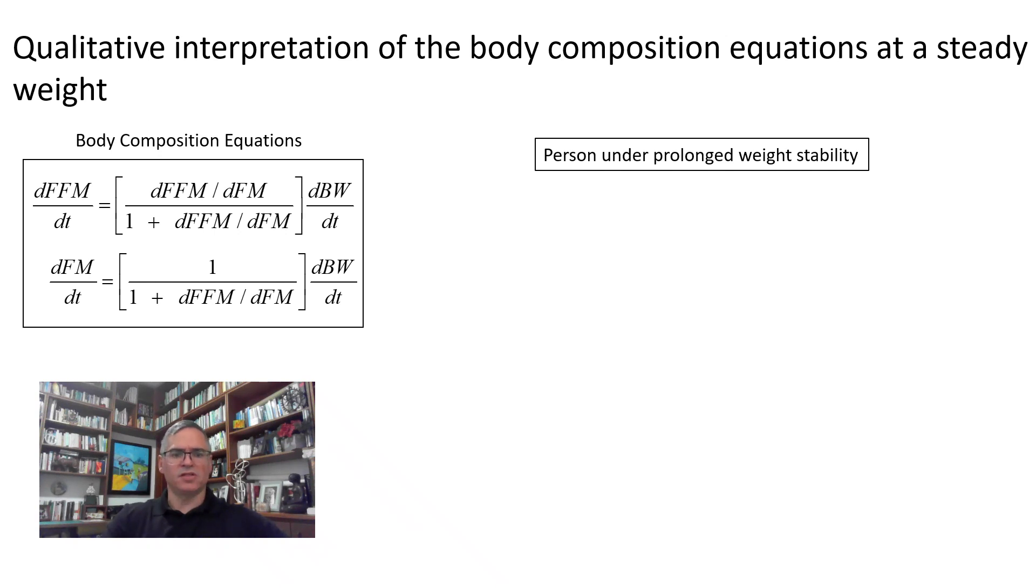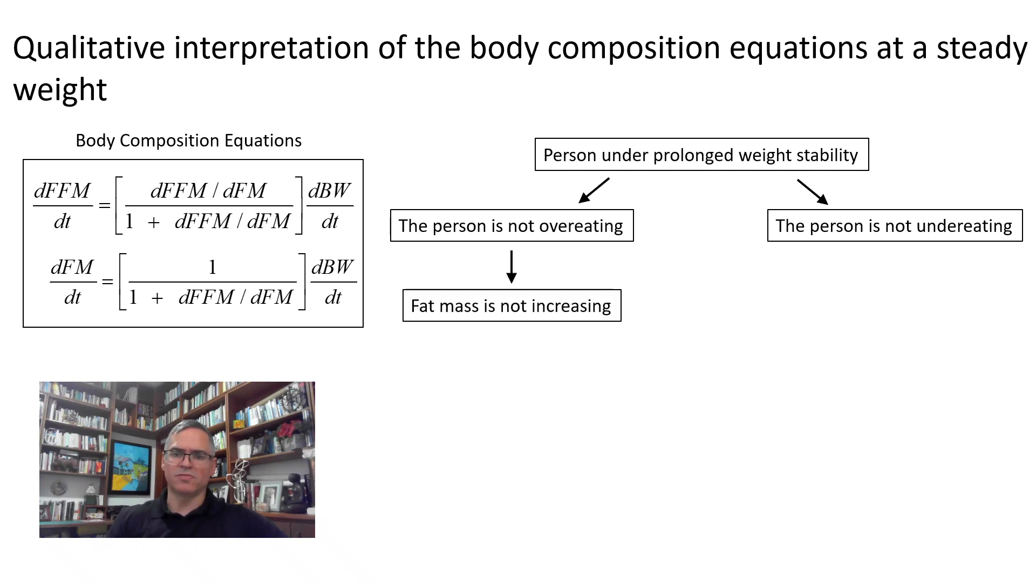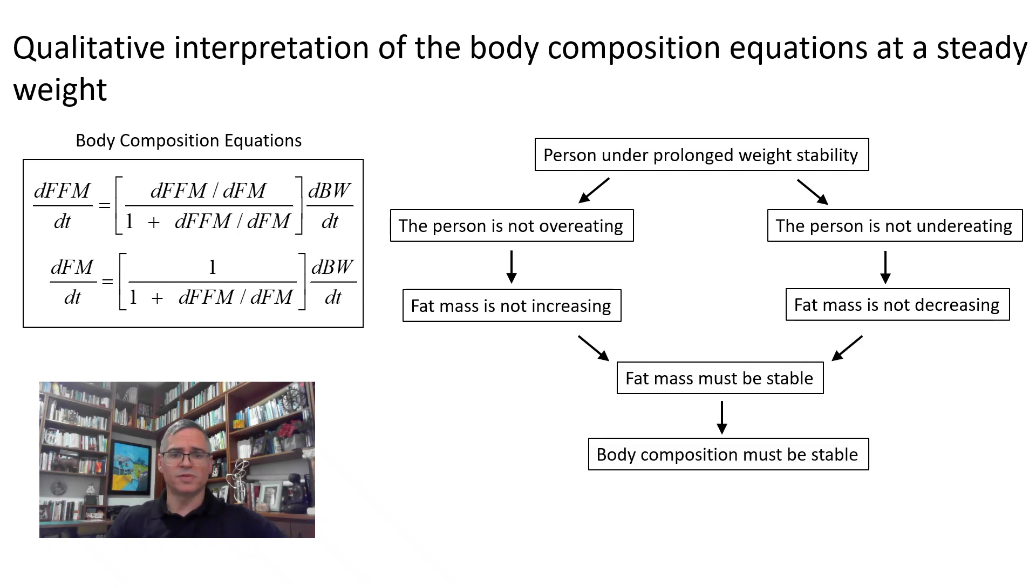If a person is under prolonged weight stability, then the person is not overeating, and the person is not under eating. If the person is not overeating, fat mass cannot be increasing. Hence, fat mass must be stable, which means that body composition must be stable.